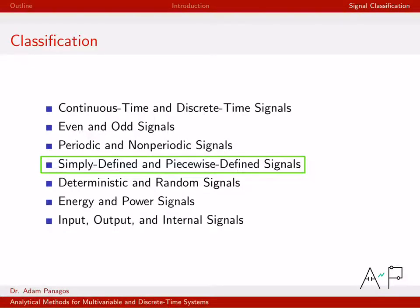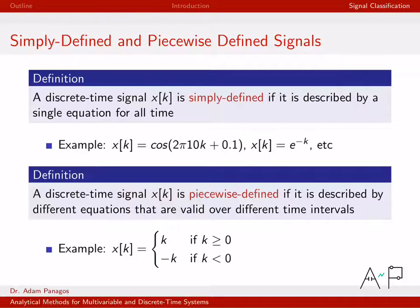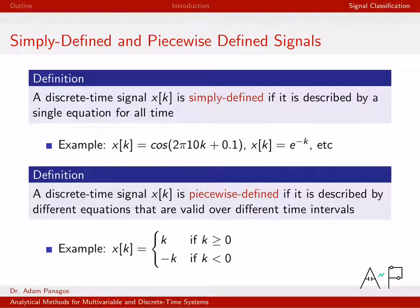The next signal property we're going to look at is simply defined and piecewise defined signals. This is a pretty easy one, but it is important — a definition and vocabulary that we need to be familiar with. On the top here, let's talk about simply defined signals, and on the bottom, we'll talk about piecewise defined signals.